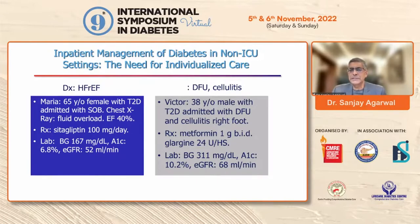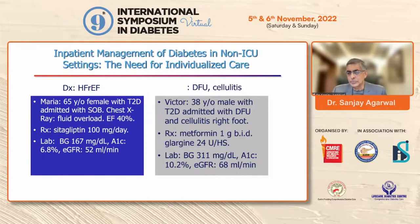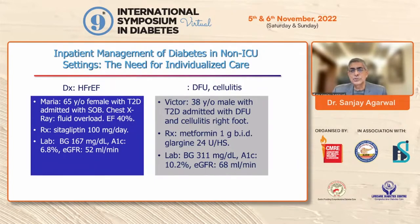On the other hand, a 38-year-old male with diabetes was admitted for a diabetic foot ulcer with cellulitis of the right foot. He was on metformin 1 gram twice a day and glargine 24 units at bedtime. His labs showed blood glucose of 311, HbA1c of 10.2, and eGFR of 68 — clearly an uncontrolled patient. Both will require insulin therapy at the time of hospitalization.